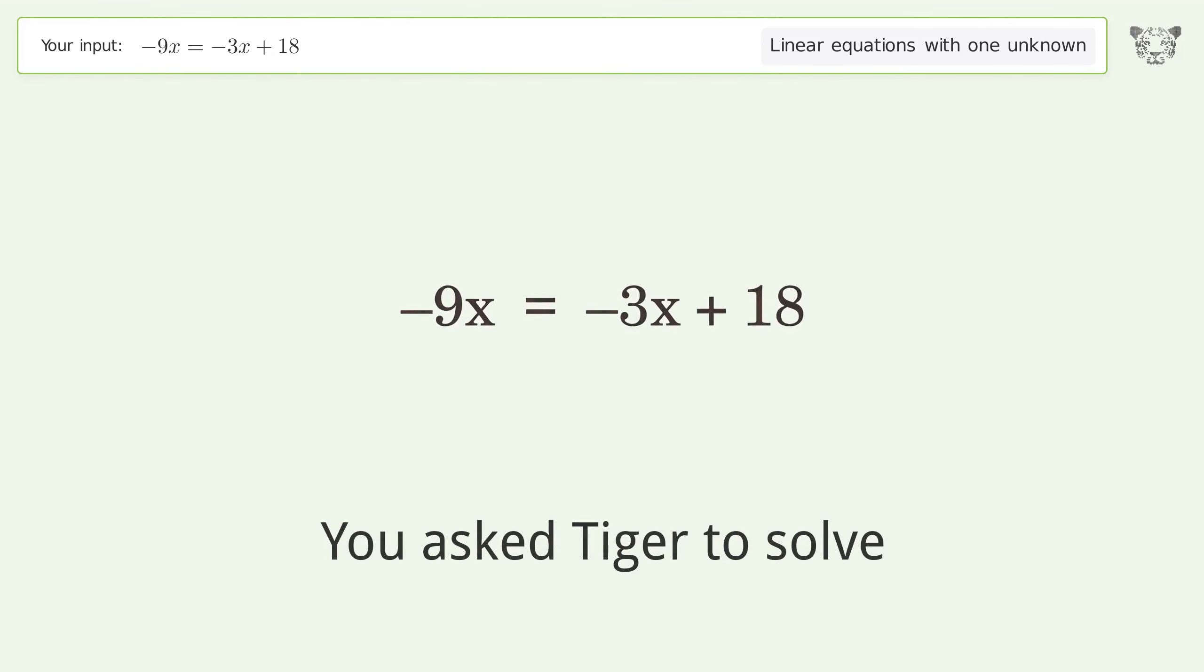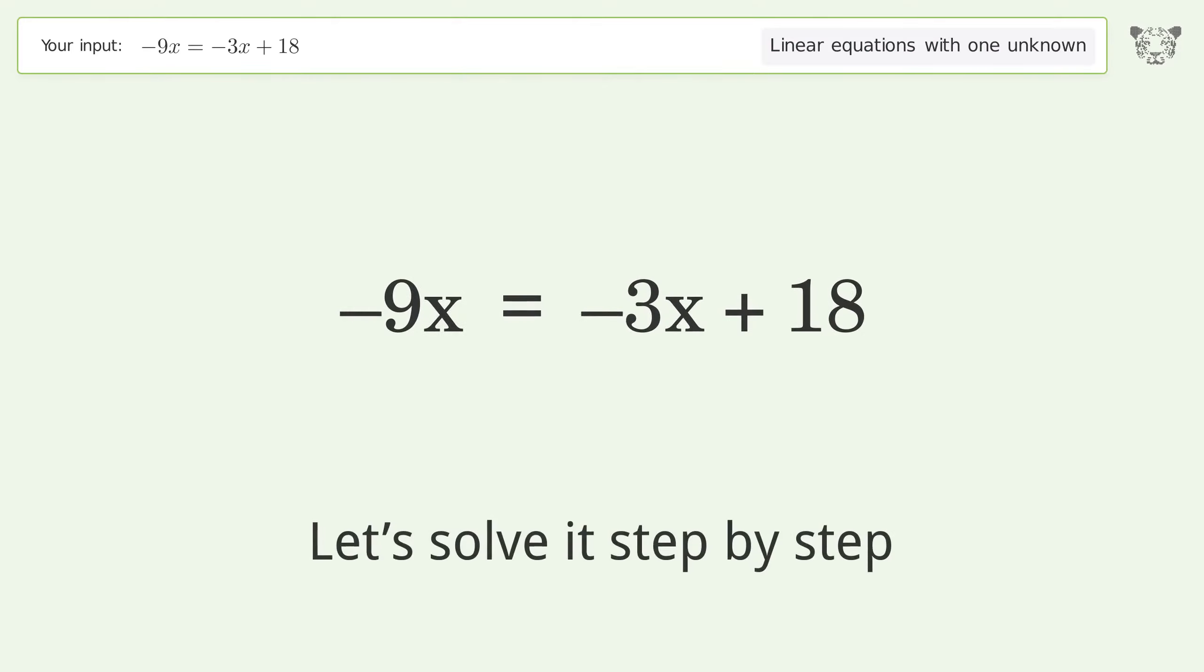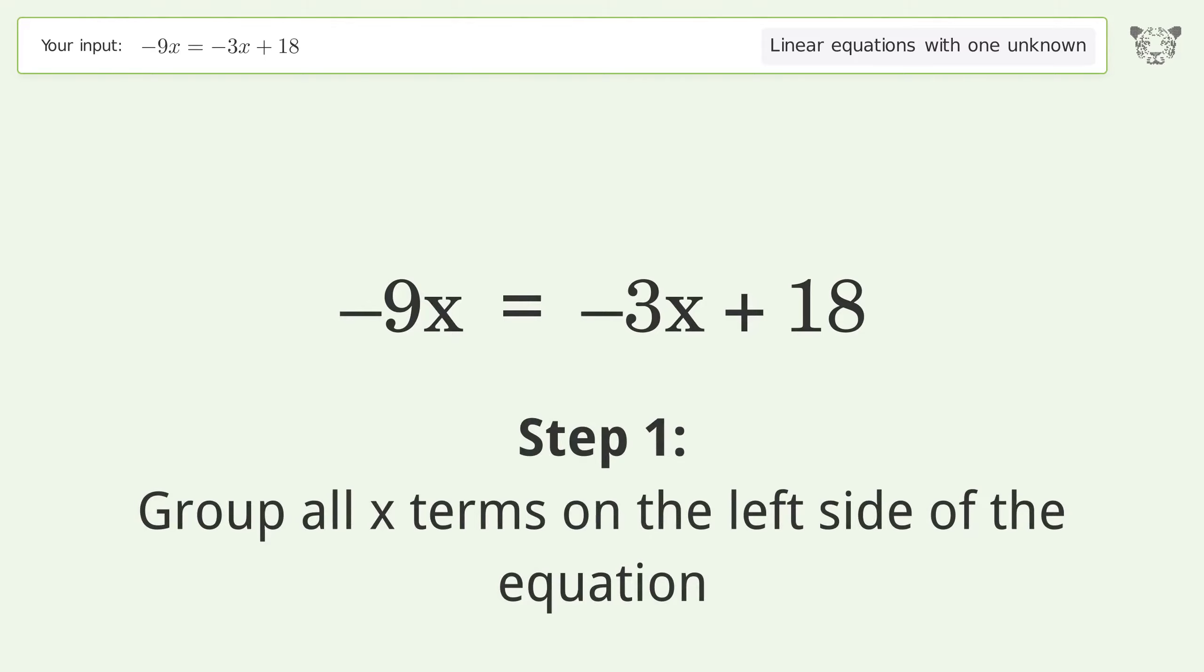You ask Tiger to solve this deals with linear equations with one unknown. The final result is x equals negative three. Let's solve it step by step. Group all x terms on the left side of the equation. Add 3x to both sides.